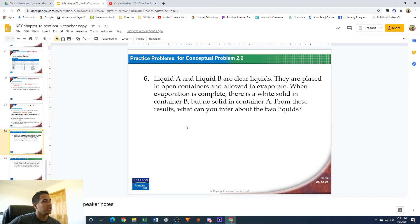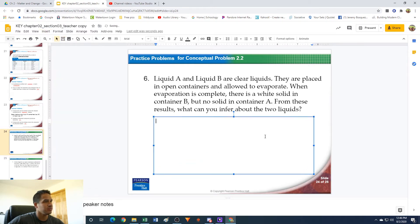Number six: liquid A and liquid B are clear liquids. They are placed in open containers and allowed to evaporate. When evaporation is complete, there is a white solid in container B, but no solid in container A. From these two results, what can you infer about the two liquids? This is a little bit of a tricky one, so let's insert a text box here so we can do some typing and change our font size.